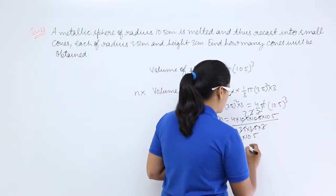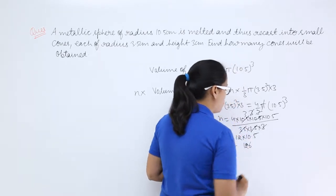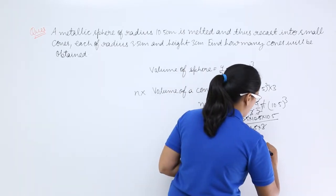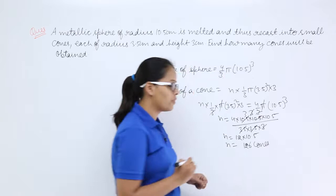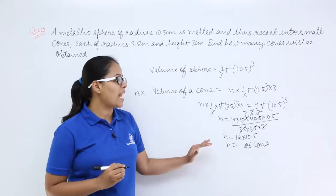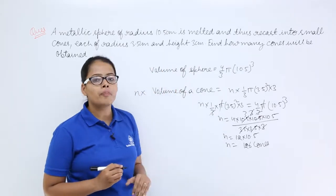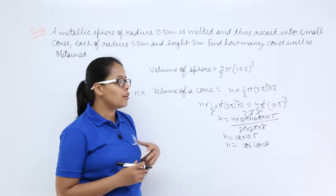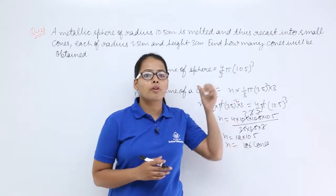When you solve this further, what will you get? You will get 126 cones. How many cones can be recasted from this sphere? 126 cones can be recasted from this volume of sphere.